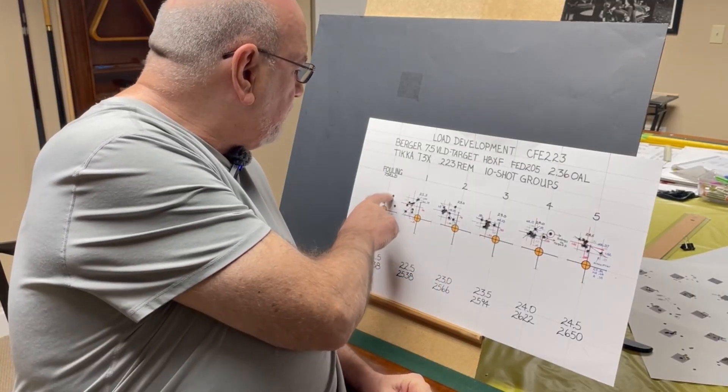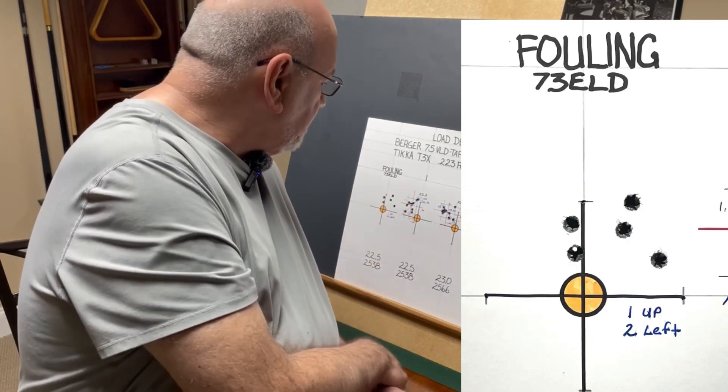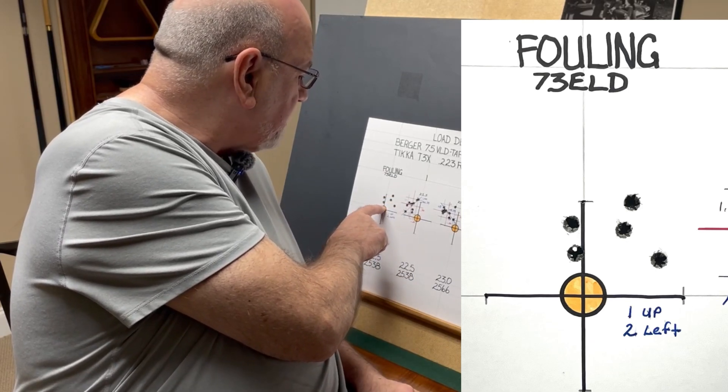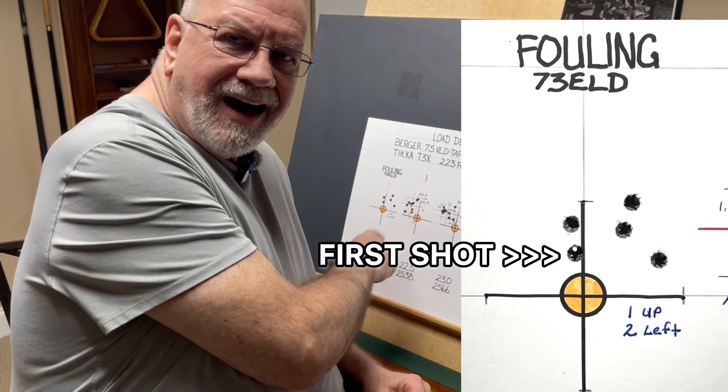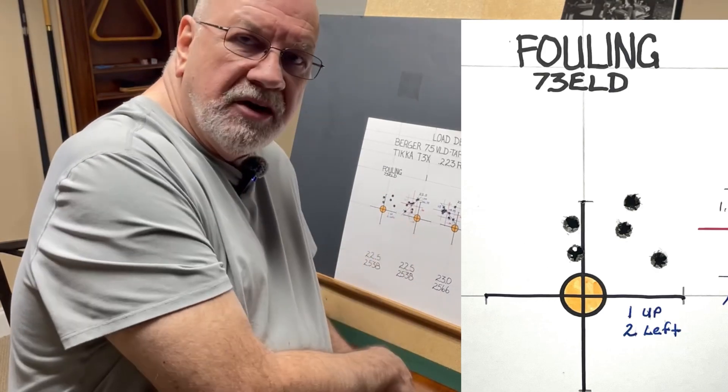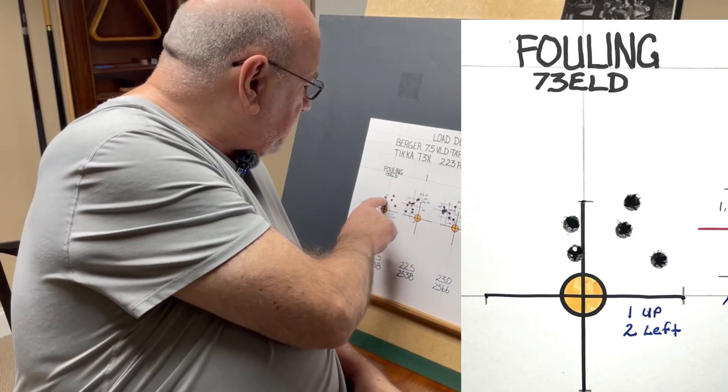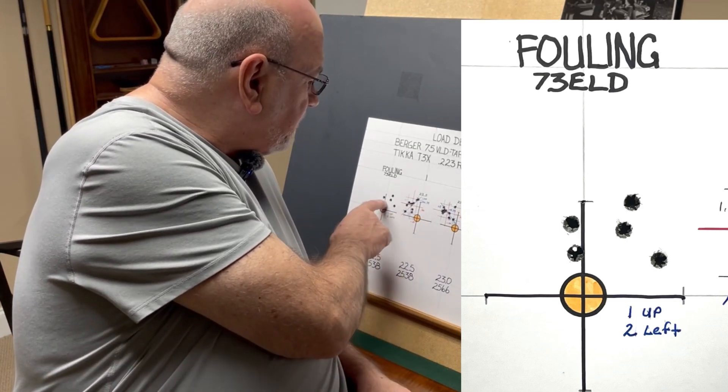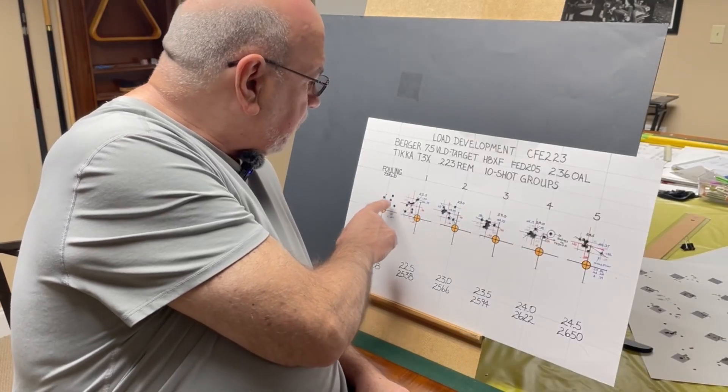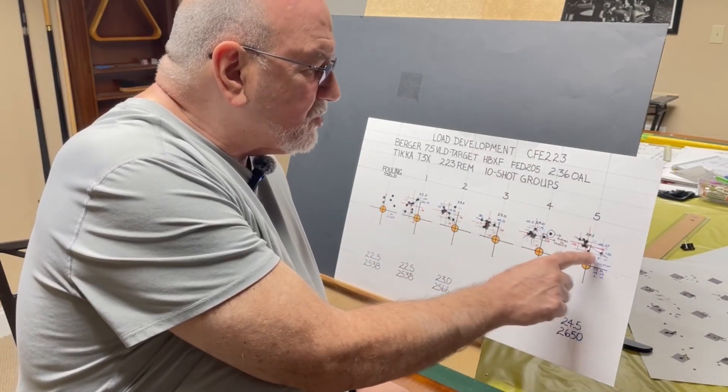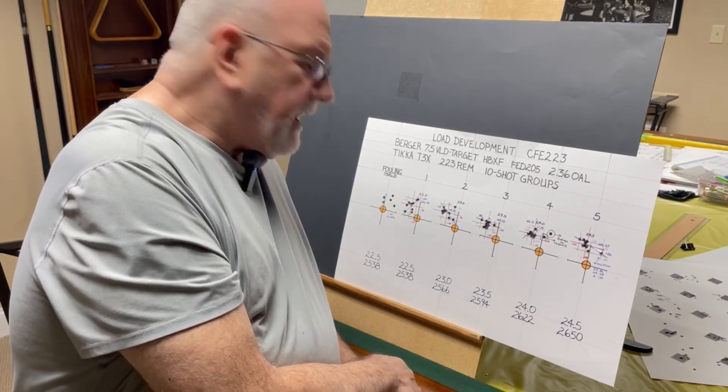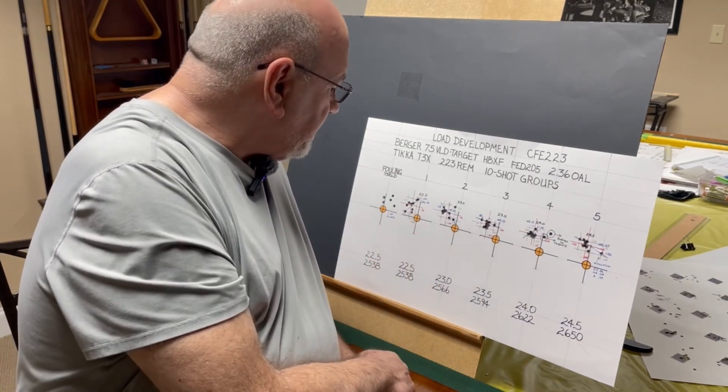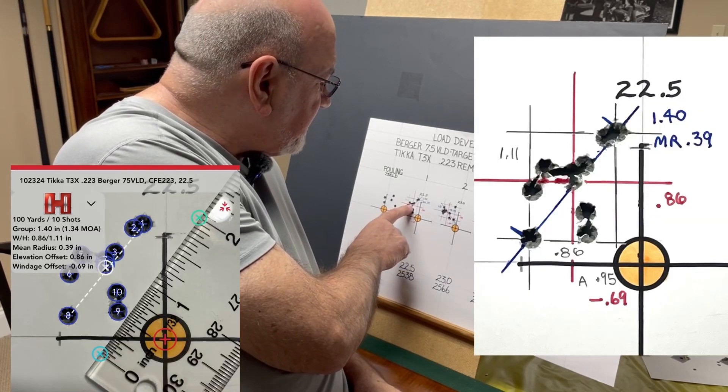I first shot a fouling group using a 73 grain ELD match bullet. It was shooting somewhat to the right. My first shot was kind of close and I want this to be adjusted high so that I don't destroy my point of aim with the impacts. After shooting these five shots I adjusted the scope one click up and two clicks to the left. Well I probably shouldn't have done that because all of these groups were then shooting to the left.